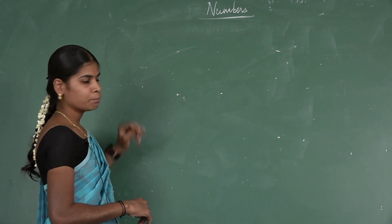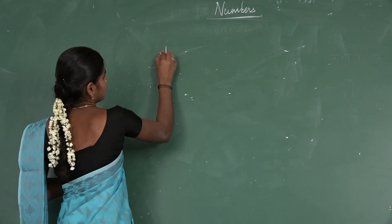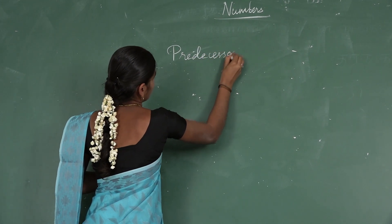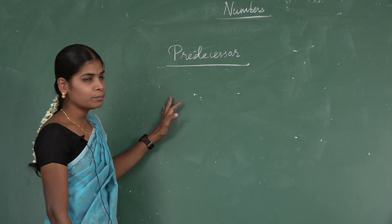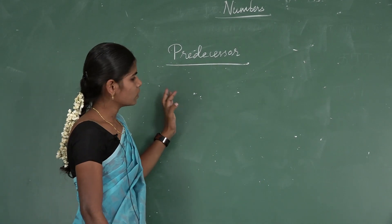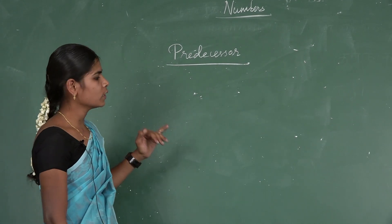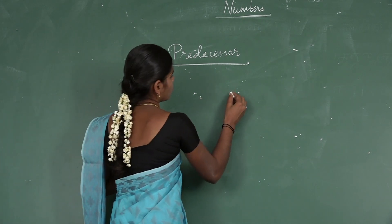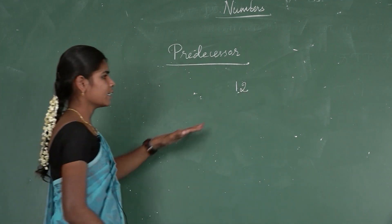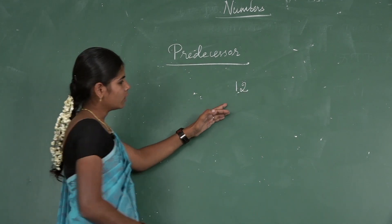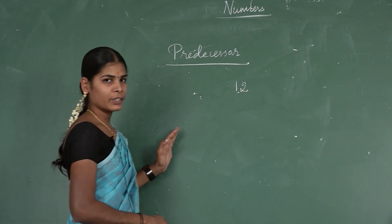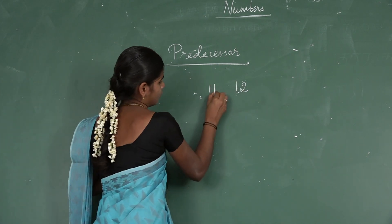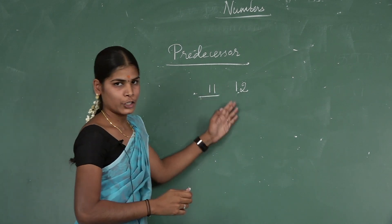Now let us learn about the predecessor and successor. What is a predecessor? Predecessor means the number that comes just before a given number. For example, take 12. What is the predecessor of 12? The number just before 12 is 11. So 11 is the predecessor of 12.